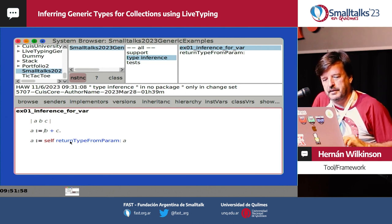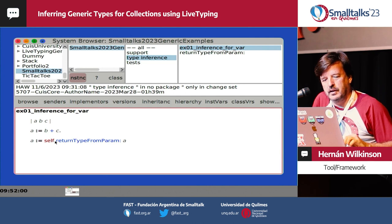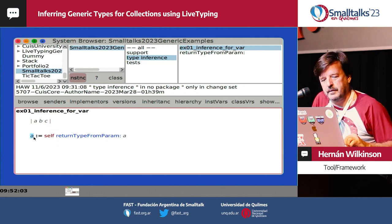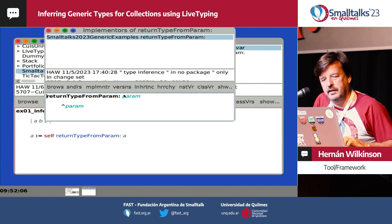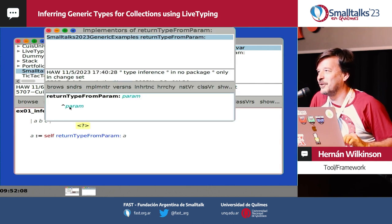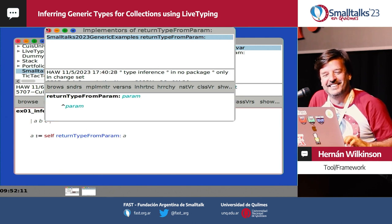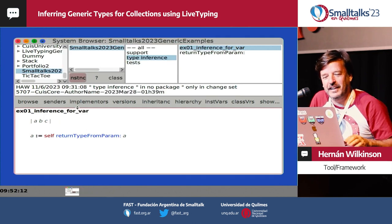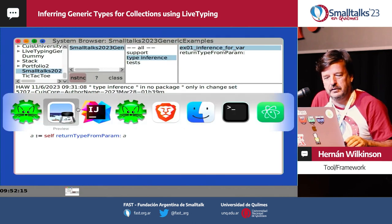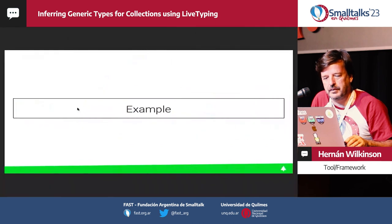So that's how type inference works — a quick introduction. It has some issues like the recursive circular case I just showed.